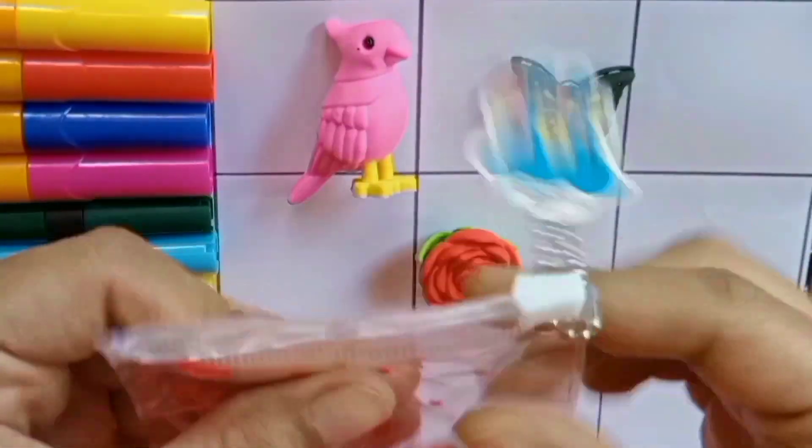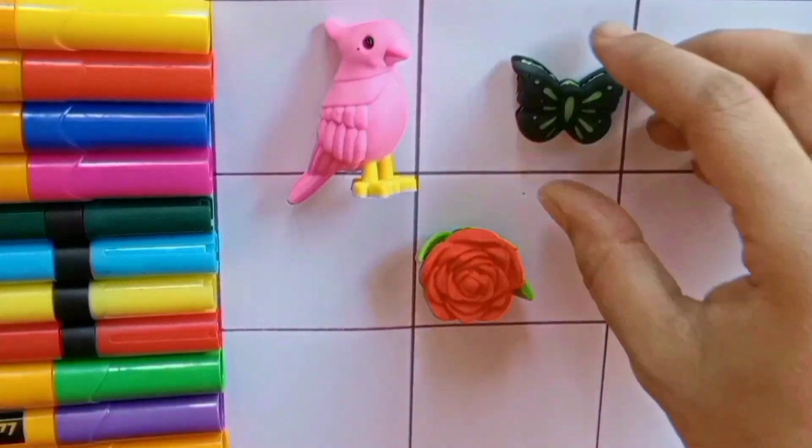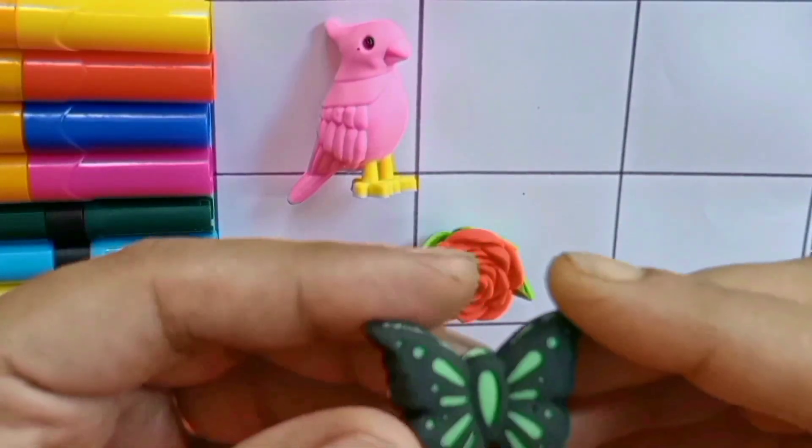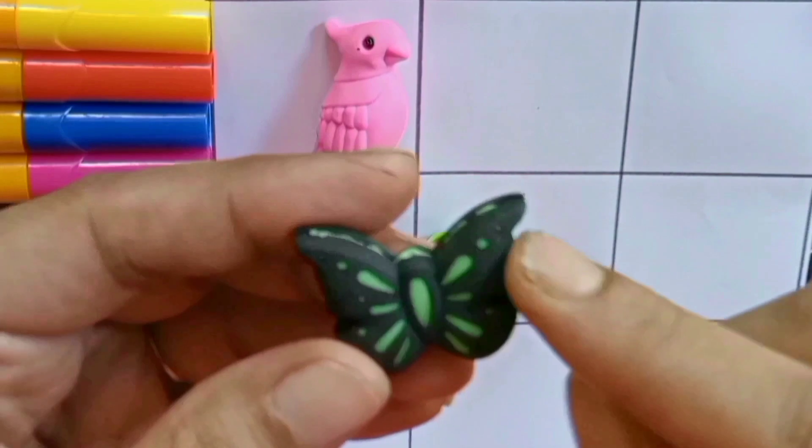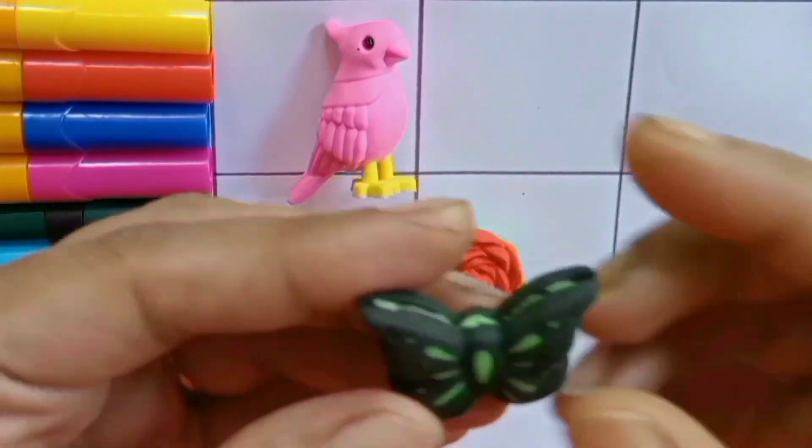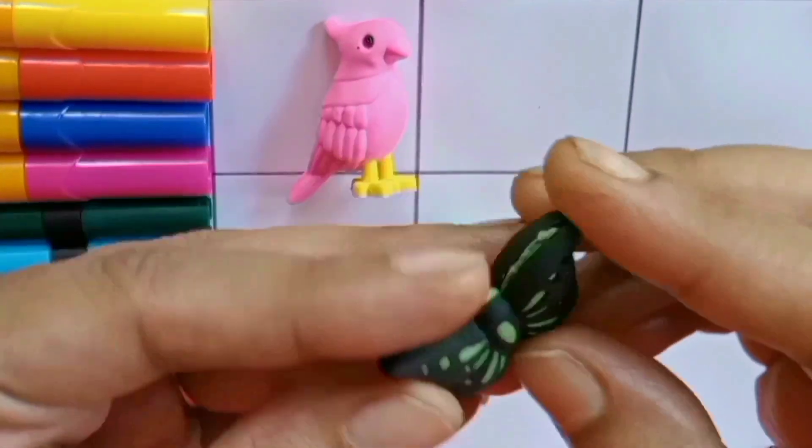Do you know that they all have parts? You can also separate their parts. A butterfly. Black color, green color. This is so nice.